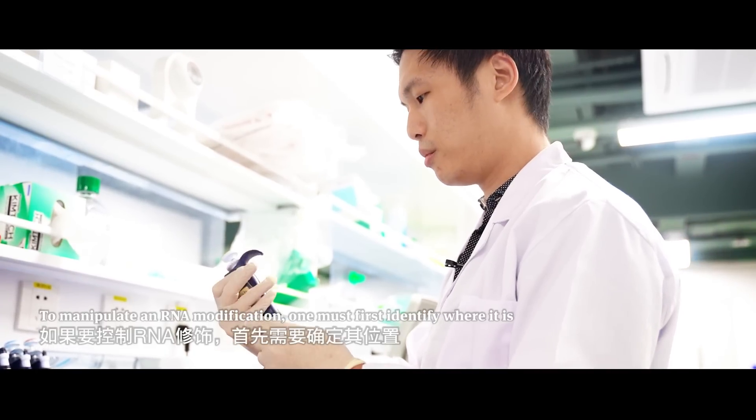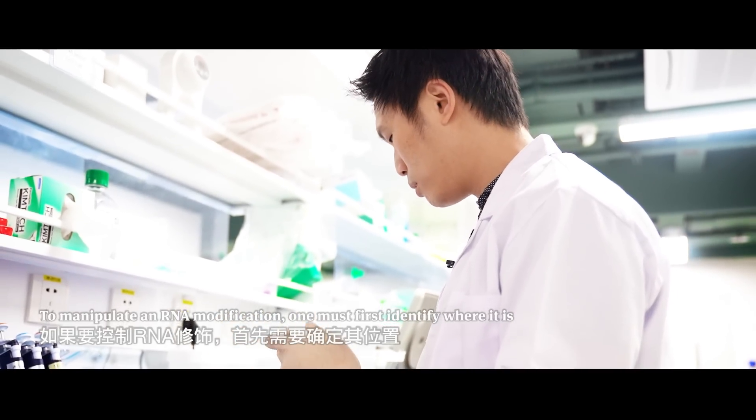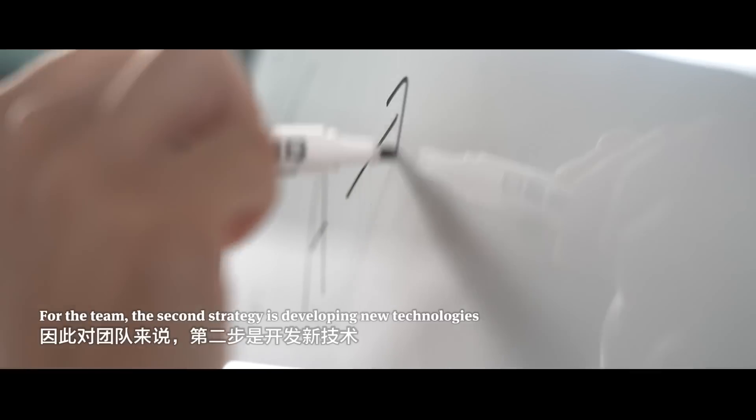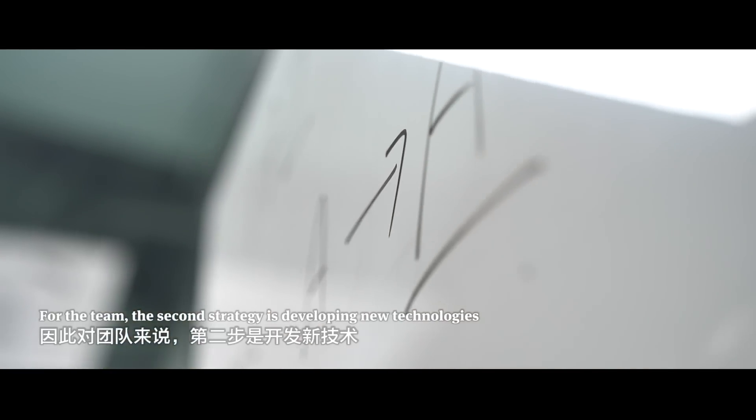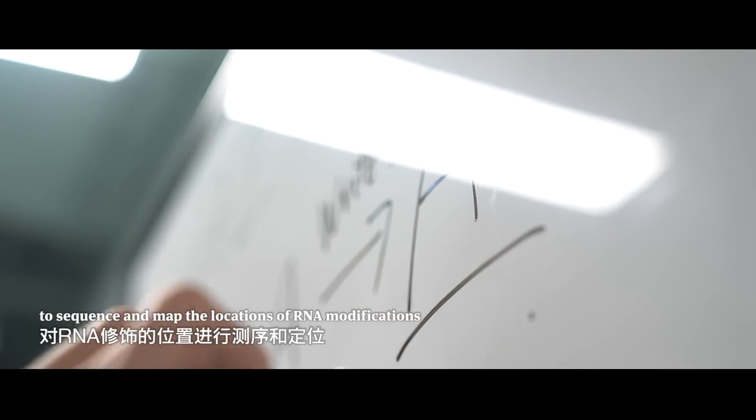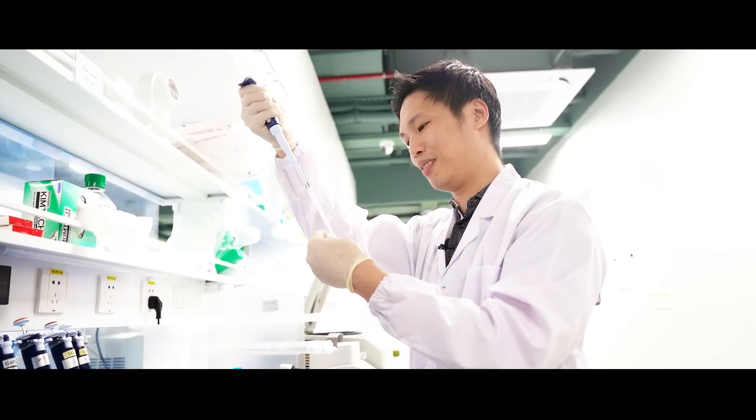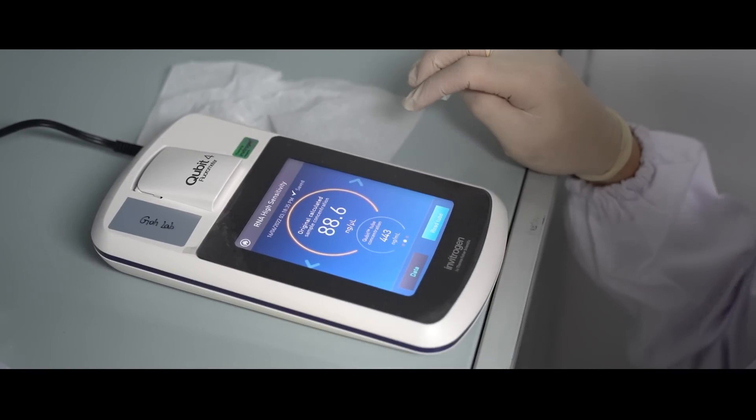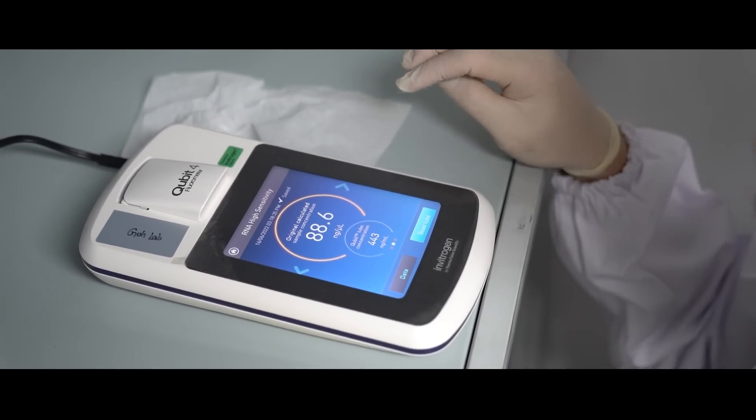To manipulate an RNA modification, one must first identify where it is. For the team, the second strategy is developing new technologies to sequence and map the locations of RNA modifications. Let me know when the time is up. So the first sample has a concentration of 88.6.